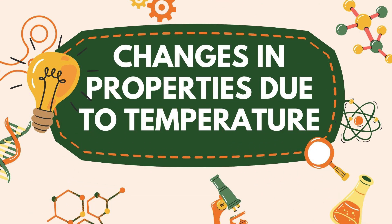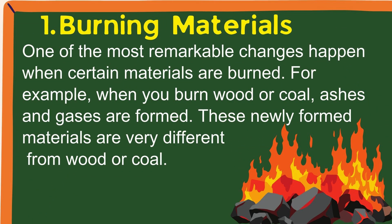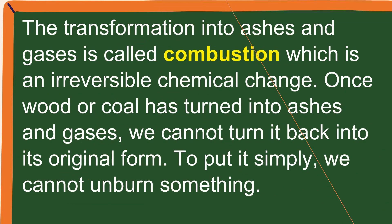Changes in Properties Due to Temperature. 1. Burning materials — one of the most remarkable changes happens when certain materials are burned. For example, when you burn wood or coal, ashes and gases are formed. These newly formed materials are very different from wood or coal. The transformation into ashes and gases is called combustion, which is an irreversible chemical change. Once wood or coal has turned into ashes and gases, we cannot turn it back into its original form — we cannot unburn something.